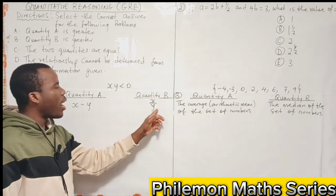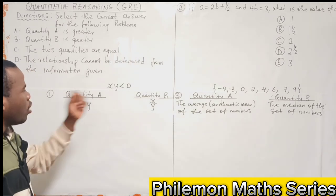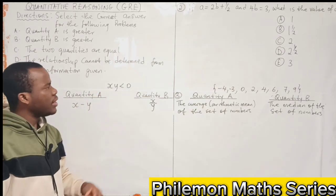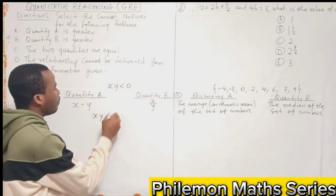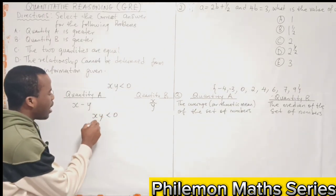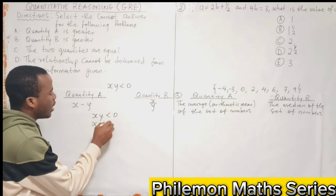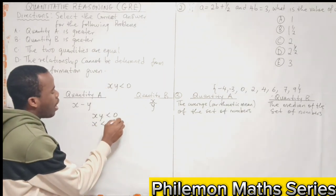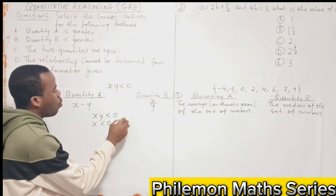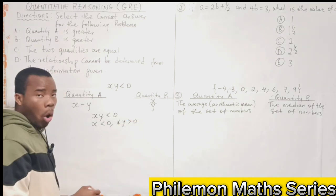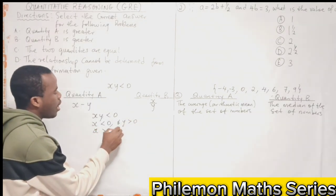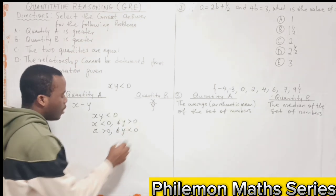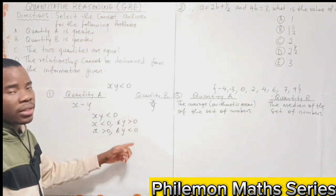If xy is negative, it means that x is negative and y is positive, or x is positive and y is negative. It is any of these two cases that we want xy to be negative.